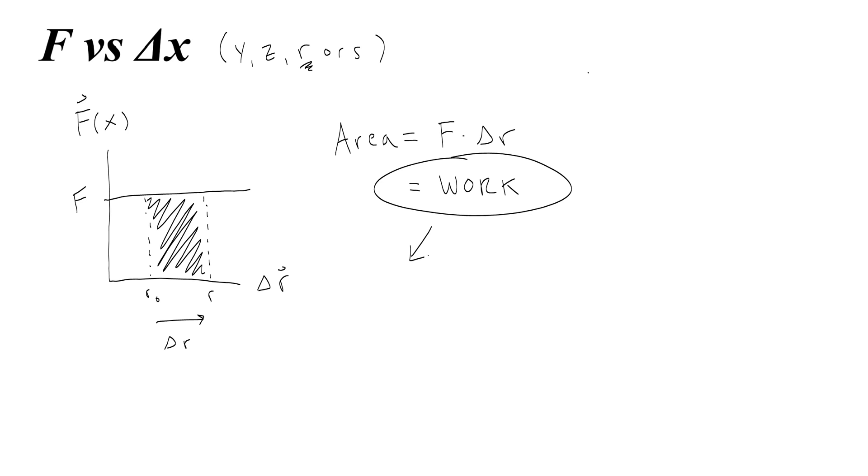So force times the change of position, the displacement, is work. So, now you've discovered that the area of a force versus position graph tells you the work that's being done on an object. This is useful if the force that you're looking at is the only force acting on the object, because that would be giving you an amount of net work. And if you know what the net work is, then you can quantify the change of kinetic energy in an object and therefore say how fast it's going at certain times.